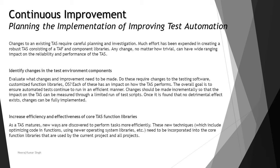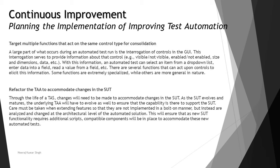The second factor is increasing the efficiency and effectiveness of core test function libraries. Libraries play a really vital role in increasing the efficiency of working test functions. As a test matures, new ways are discovered to perform tasks more efficiently. These new techniques — which may include optimizing coding functions or using newer operating system libraries — need to be incorporated into the core function library used by the current and all future projects.